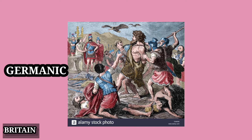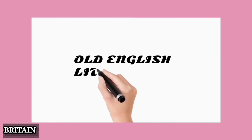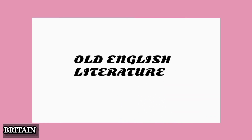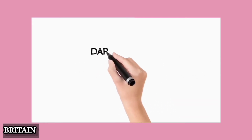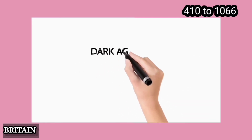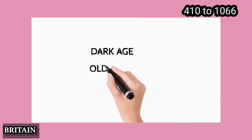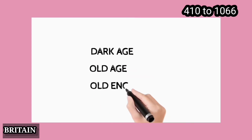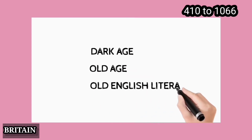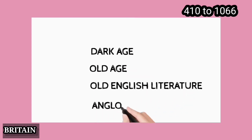یہی Old English period ہے، یعنی Anglo-Saxon period — جسے ہم مختلف ناموں سے جانتے ہیں: Dark Age، Old Age، Old English Literature اور Anglo-Saxon period۔ یہ period 410 سے 1066 تک کا ہے۔